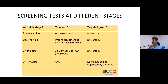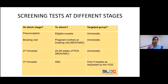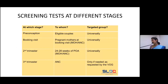Screening should occur at different stages: the preconception period, the booking visit, and the second trimester. All should be screened universally for diabetes, irrespective of age and risk factor status. When it comes to the third trimester, that may be decided by the treating physician or the obstetrician whether another screening test is needed.